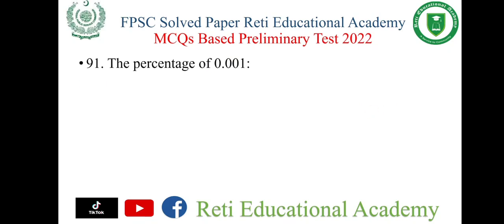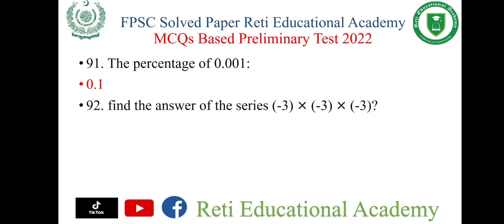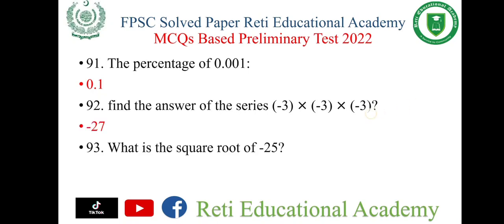Question number 91: The percentage of 0.001 is 0.1. Question number 92: Find the answer of the series minus 3 into minus 3 into minus 3 — the right answer is minus 27. Question number 93: What is the square root of minus 25? As per the options, there was 'none of these,' and the right answer is 5.